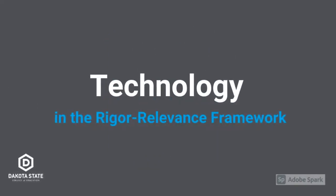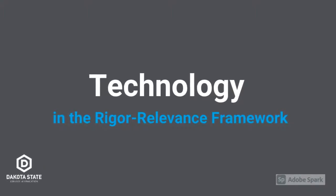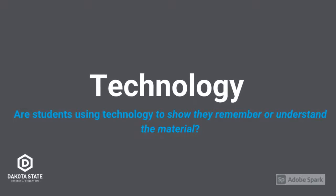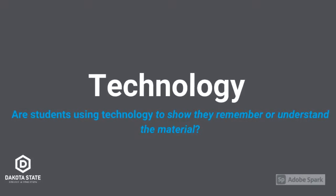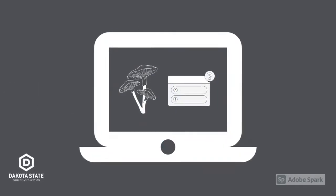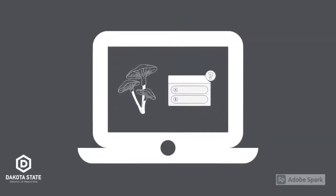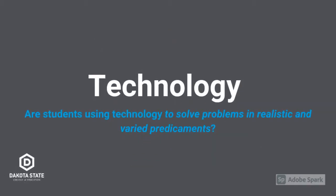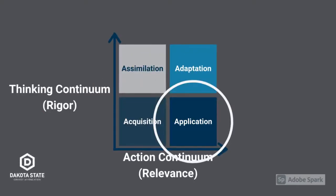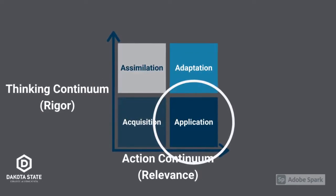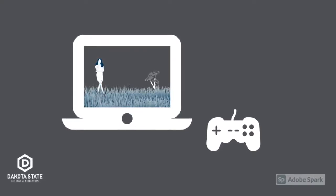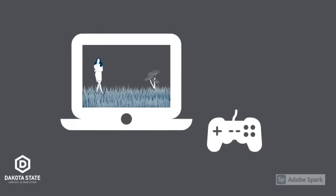To determine whether technology is being used in the best way possible, consider the following. Are students using technology to show they remember or understand the material? That would be the acquisition quadrant — this might look like a quiz review of types of fungi. Are students using technology to solve problems in realistic and varied predicaments? That would be in the application quadrant — this might look like a computer game where students play as foragers who encounter and identify different types of fungi.